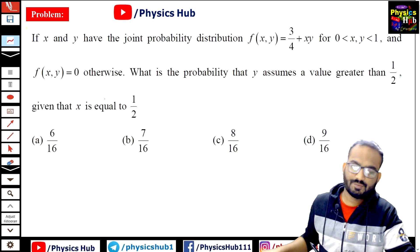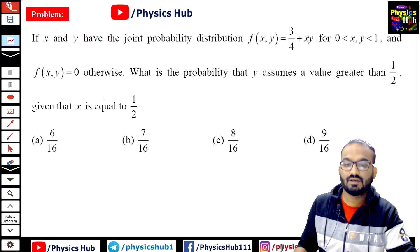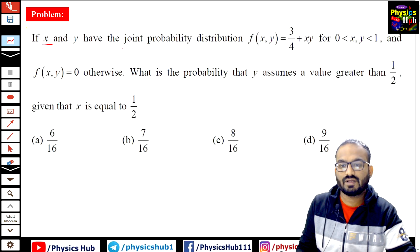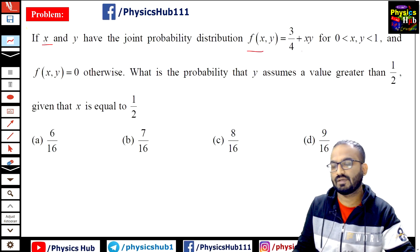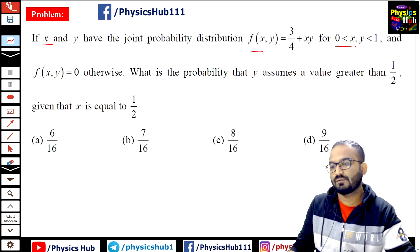Here we have a problem from mathematical physics. It reads like this: if x and y have the joint probability distribution f(x,y) equals 3/4 plus xy for 0 less than x and y